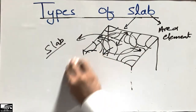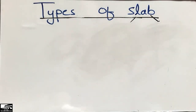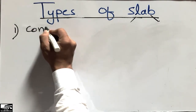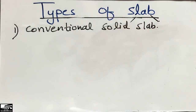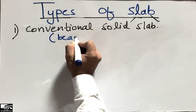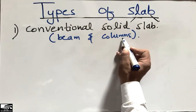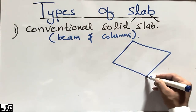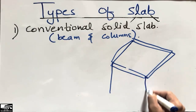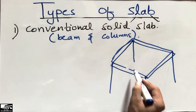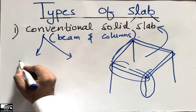Now I will discuss the types of slabs. The first type is the conventional solid slab. This is the type of slab which is supported by beams and columns only. It is the most commonly used slab in daily life structures — supported by beams on all sides with columns at the supports. This type of slab supported only by beams and columns is called the conventional solid slab.